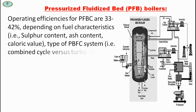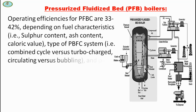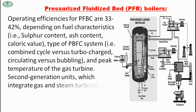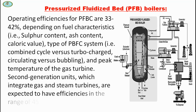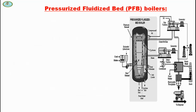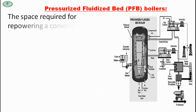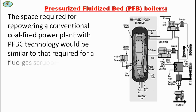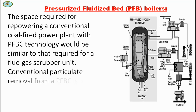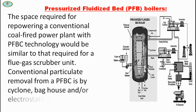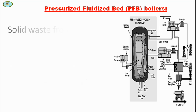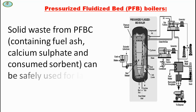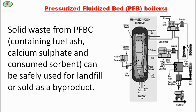Types of PFBC systems include combined cycle versus turbocharged, circulating versus bubbling, and deep temperature of the gas turbine. Second-generation units, which integrate gas and steam turbines, are expected to have efficiencies in the range of 45 to 50%. The space required for repowering a conventional coal-fired power plant with PFBC technology would be similar to that required for a flue gas scrubber unit. Conventional particulate removal from PFBC is by cyclone, bag house, and electrostatic precipitator. Solid waste from PFBC containing fuel ash, calcium sulphate, and a calcium sorbent can be safely used for landfill or sold as a by-product.